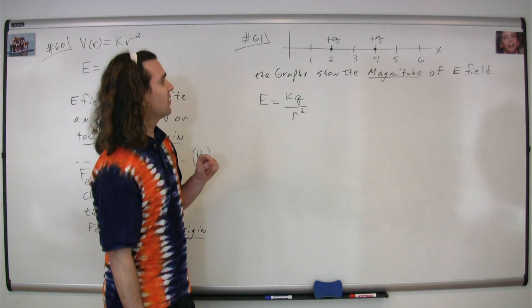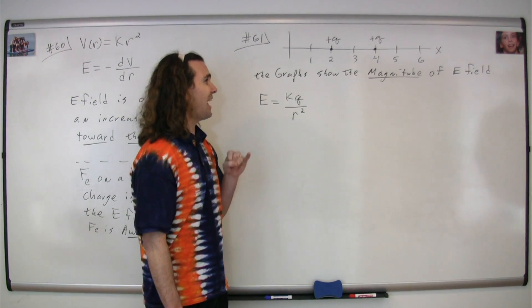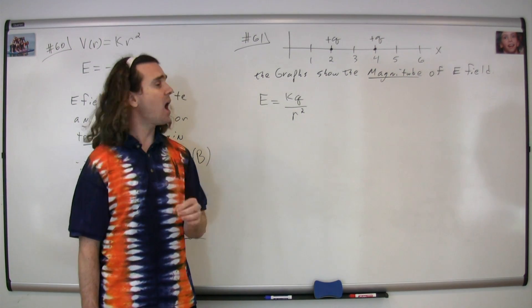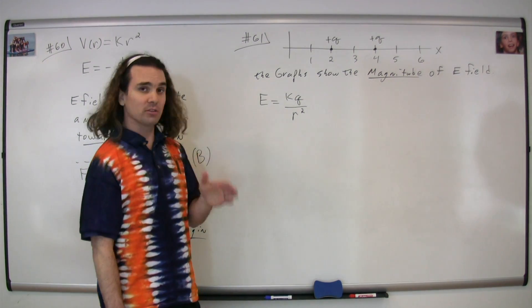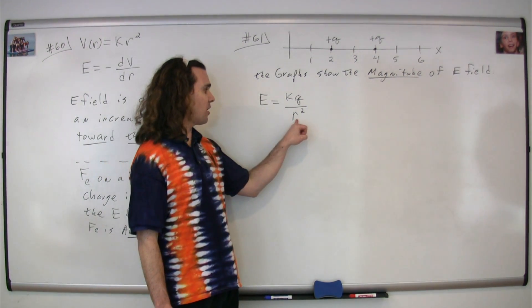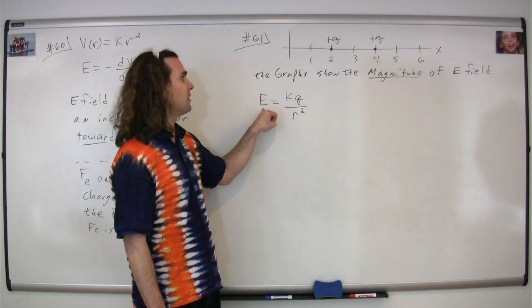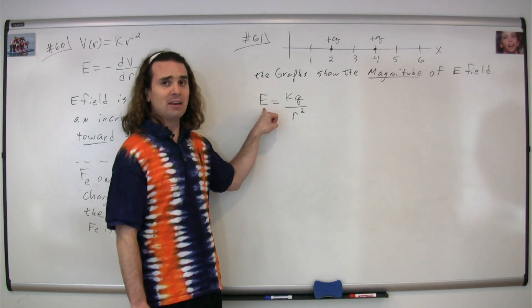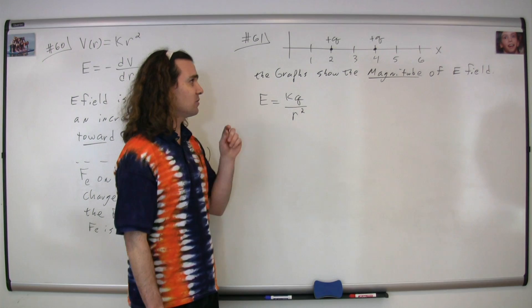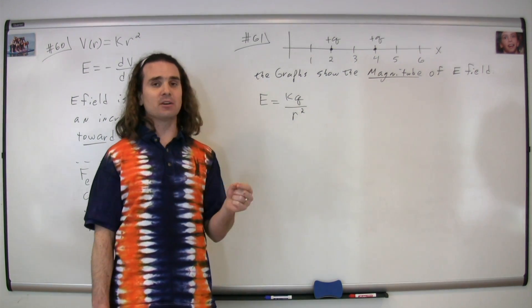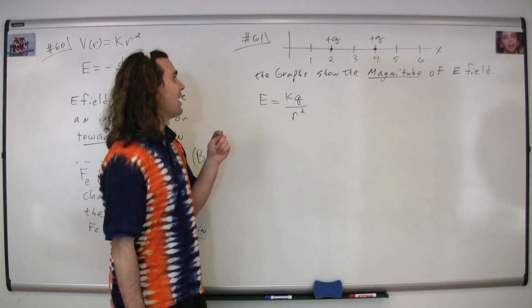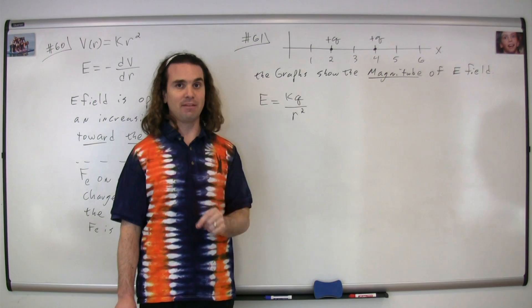Notice that the electric field at two meters and four meters would be directly on each of the charges, and therefore r would be infinitesimally small, and the electric field would approach infinity. So at x equals two meters and four meters, the graph should show that the electric field approaches infinity.